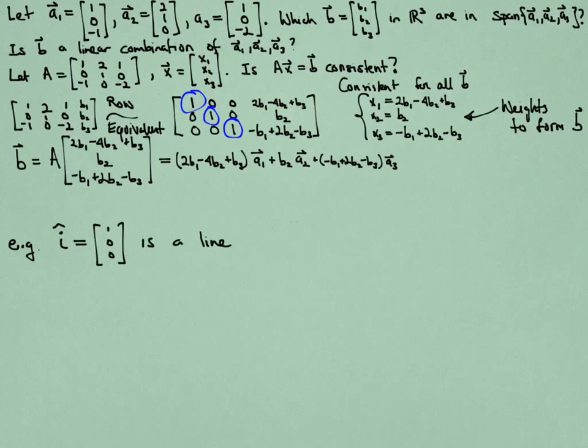So as an example, just to illustrate this property, if I take the basic vector I, whose components are 1, 0, and 0, is this a linear combination of the three vectors A1, A2, and A3? The answer is, of course, yes, because the system was consistent regardless of what our B was.